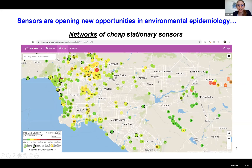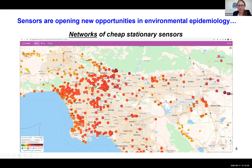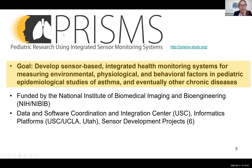Here's what the air quality looks like using PurpleAir last year, and here it is yesterday — it wasn't quite as bad as it's been. Now we have these networks of cheap stationary sensors that give us a lot more spatial resolution. They're noisy and they're not calibrated in the same way that more gold standard research-grade equipment are, but this opens up a lot of opportunities as well.